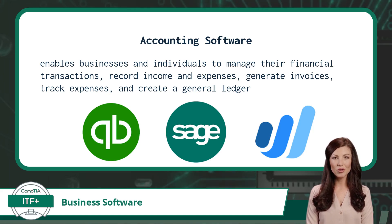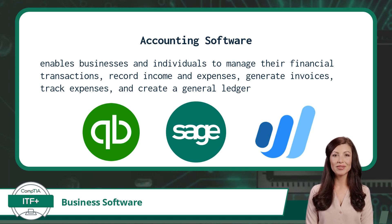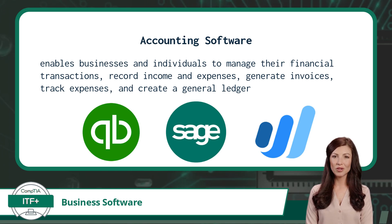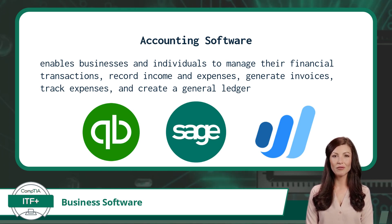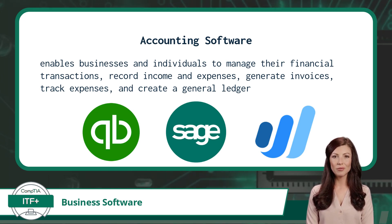Three popular examples of accounting software would include QuickBooks, Sage, and Wave. With the topic of business software behind us, we have successfully covered exam objective 3.3. Hopefully you now have a good idea of all the available types of software out there and how they can be used. Great job!